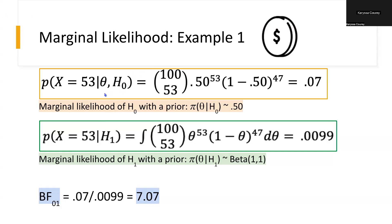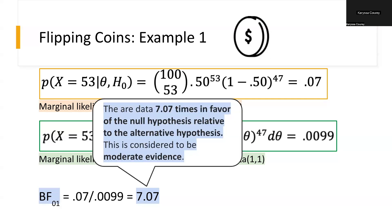For the null hypothesis, we plug in theta = 0.50 and solve for the probability of observing 53 heads — we get 0.07, which is just the binomial PMF evaluated at that point. For the alternative, we integrate over the uniform distribution; since the uniform is proportional to 1, it is included implicitly, giving a marginal likelihood of 0.0099. The Bayes factor is therefore 7.07, meaning the data are 7.07 times in favor of the null hypothesis relative to the alternative — considered moderate evidence.